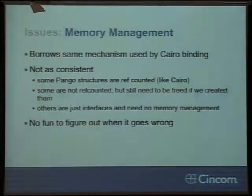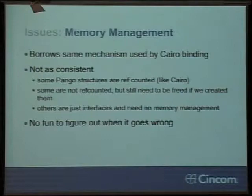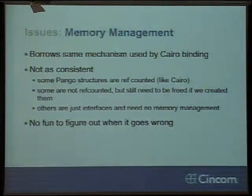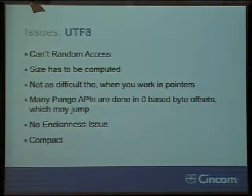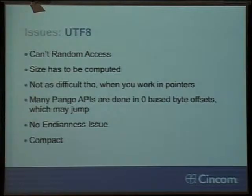Some issues I had: memory management is the same issue as Cairo — we do it pretty much the same way, but I discovered that Pango wasn't quite as consistent as Cairo had been. You had some structures that were ref-counted like the Cairo ones, but some weren't, and then others were just different. So this led to some of those core dumps I talked about earlier — it was no fun to figure out when it goes wrong, but I think I've got most of those ironed out now. UTF-8 is interesting — you don't have to worry about endianness, but as Smalltalkers we're used to saying I've got character index 4 and I want to go to index 5, and when you go to UTF-8 that doesn't work anymore because the next one may be three bytes instead of one byte. I found that I went back to thinking about things like I used to in C with pointers and just moving the pointers forward and backwards — it was a bit of a brain warp to adjust.